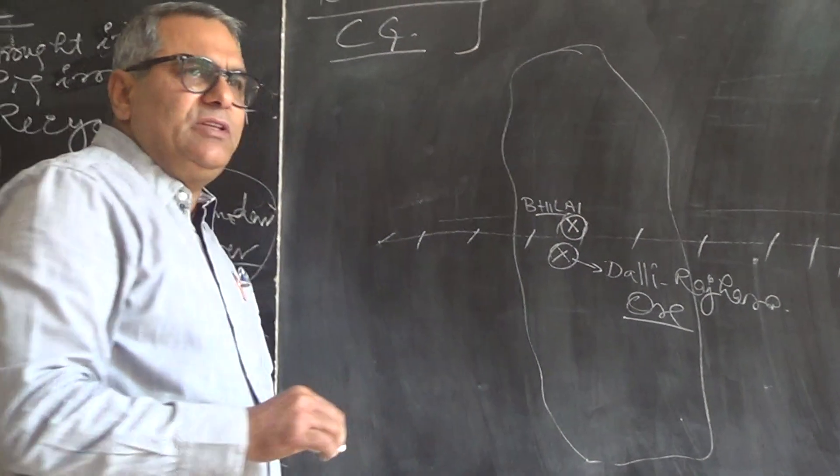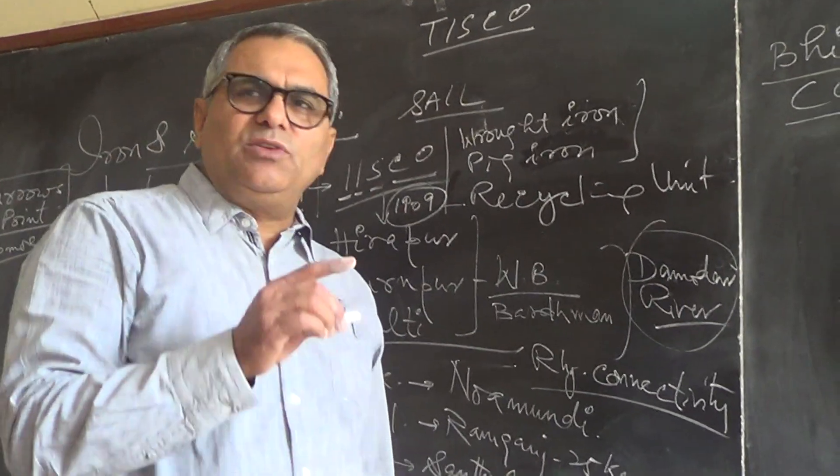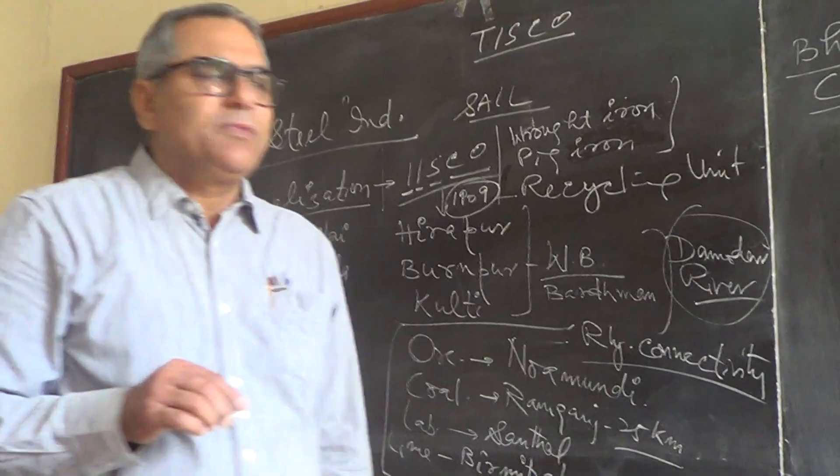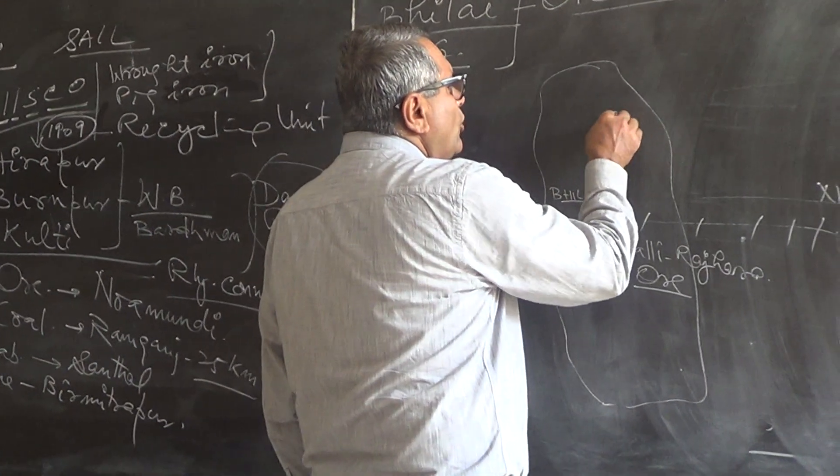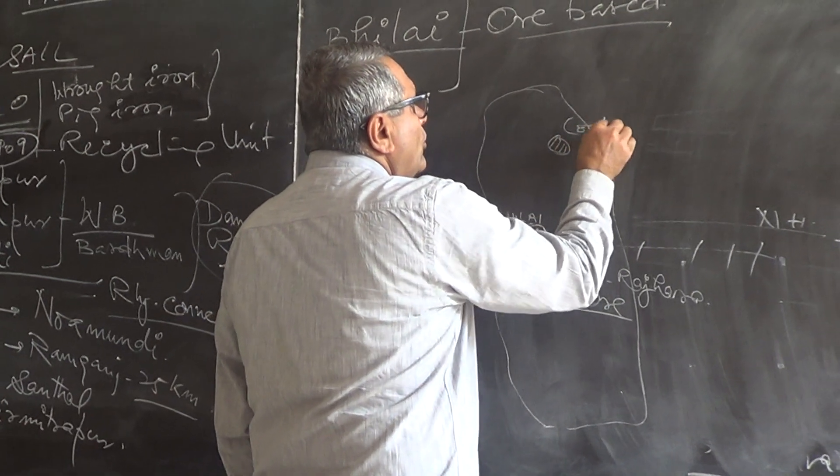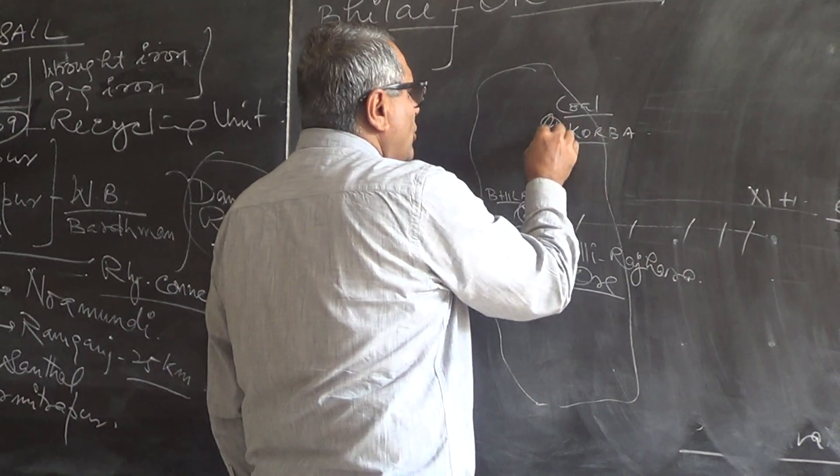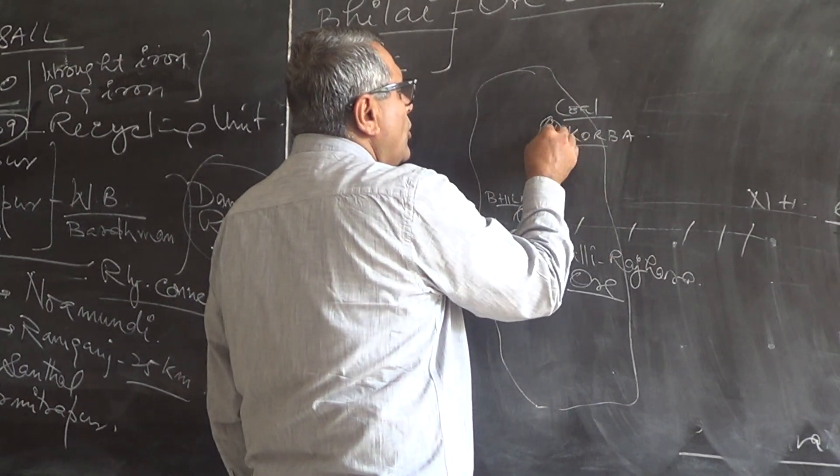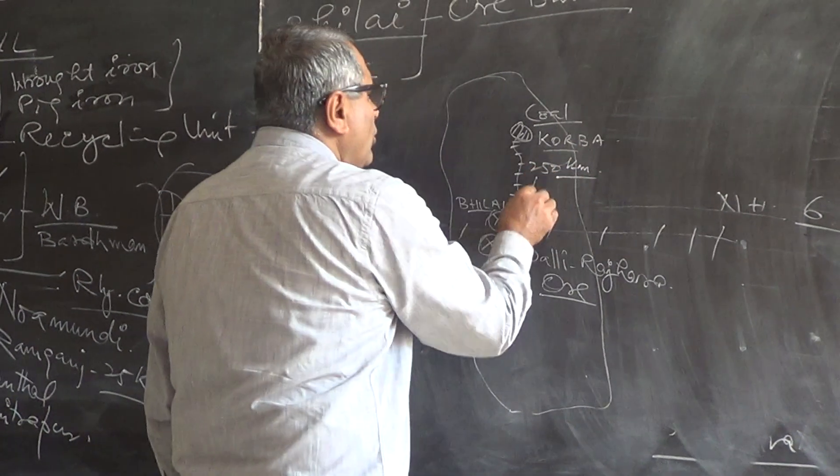We have the furnaces. This furnace was established with the collaboration of Russia, formerly USSR. We are importing coal from Korba plateau. It is called Korba. In Korba it is almost 250 km. We import coal.